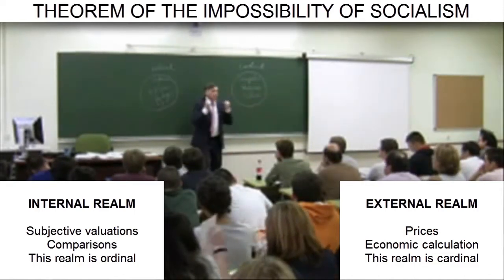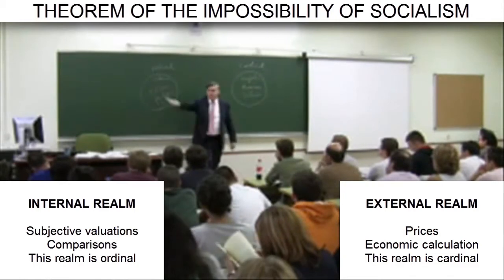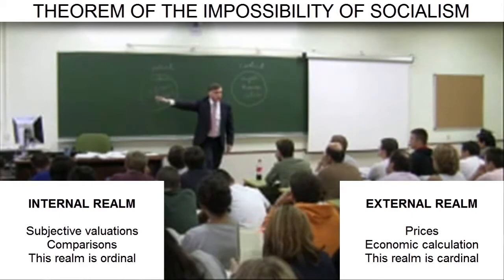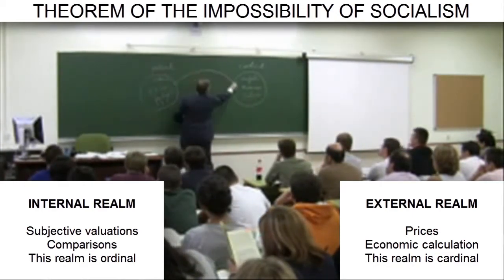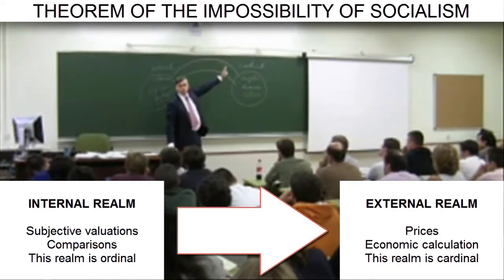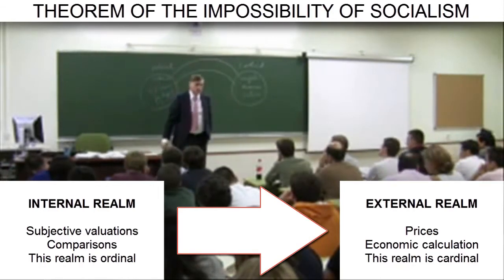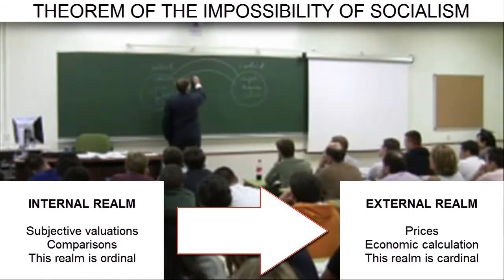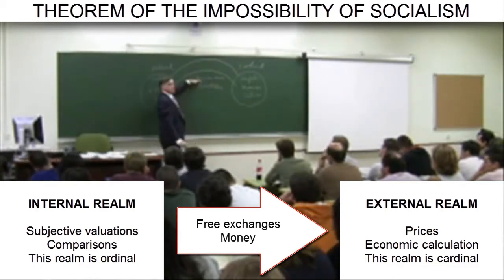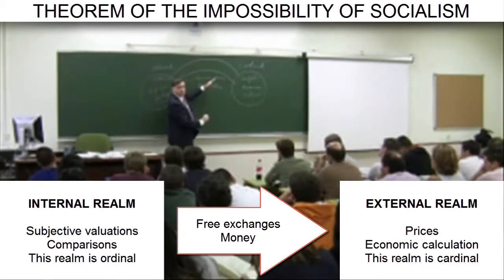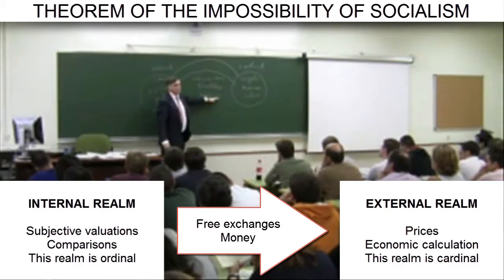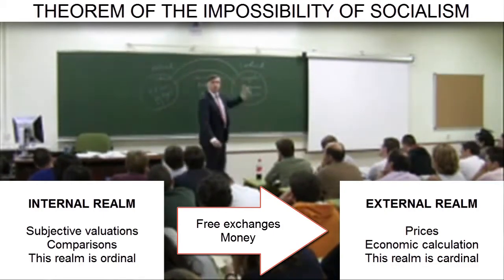What keeps the world in constant motion is the internal realm of our subjective valuations. Nevertheless, out in the market we see quotes, stock exchanges, prices, numbers, balance sheets. How do we pass from the internal, ordinal realm to the external, cardinal realm? What bridge connects them? We will see that this bridge comprises two institutions — free exchanges and money, which is an institution. Where these two are present, a market price is set in each exchange, and the market price reflects a quantitative historical reality, which permits numerical computation.